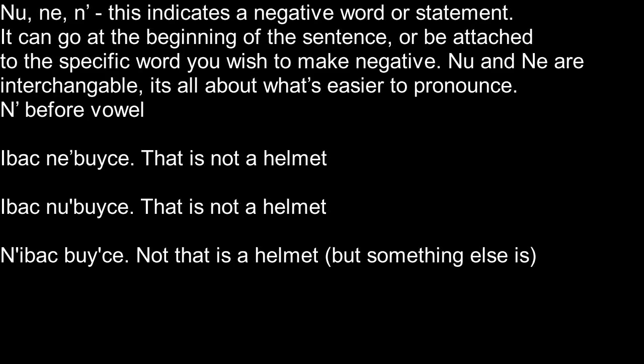Nu, ne, and n before a vowel indicates a negative word or statement. It can go at the beginning of the sentence or be attached to a specific word you wish to make negative. Nu and ne are interchangeable — it's all about what you prefer to say and how you pronounce it. For example, ibak nebusha means 'that is not a helmet.' You could also say ibak nubusha. There's also another form that works in Mandoa but sounds weird in English: you could put the negative on 'that,' giving nebak nubusha, which means 'not that is a helmet' — implying something else is.